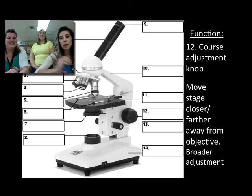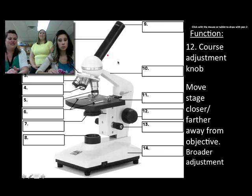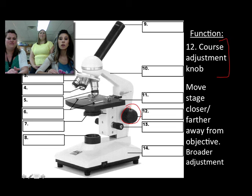Number 12, you can see it right here because we ran out of space. It's called the coarse adjustment knob. This knob helps you move the stage up and down. If you want to get something in focus, you use this. It's used for broader adjustments, so this is what you'll typically use at your scanning objective, that first objective.